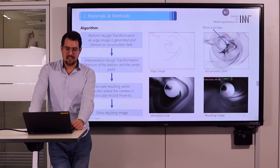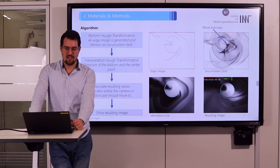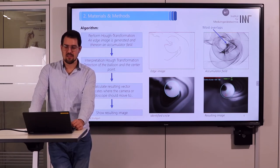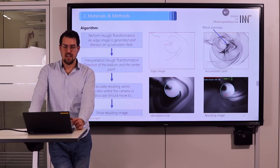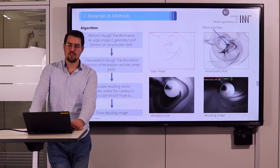To validate the algorithm, 400 images were taken in a colon model. Of great interest for us was the calculation time of the Hough transformation. We used the stopwatch function in MATLAB.